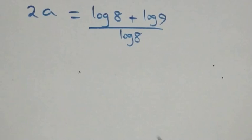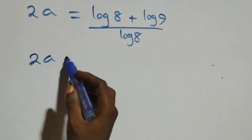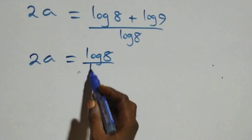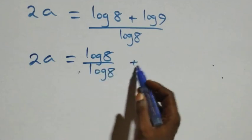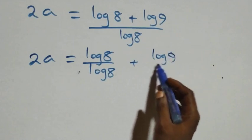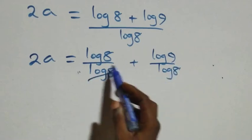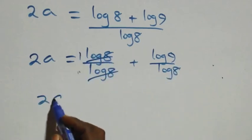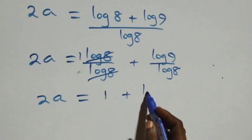We separate this into two fractions and we have 2a equals log 8 over log 8 plus log 9 over log 8. Then log 8 over log 8 cancels to give 1, and 2a now equals 1 plus log 9 over log 8.